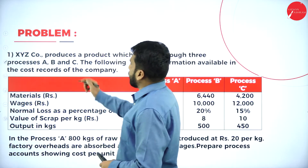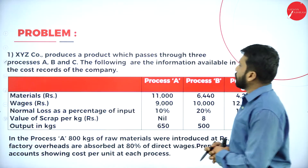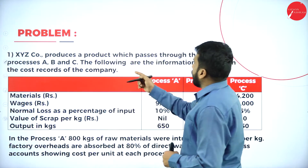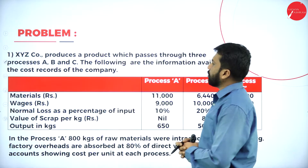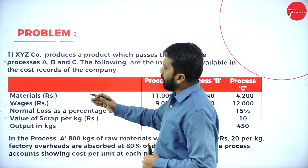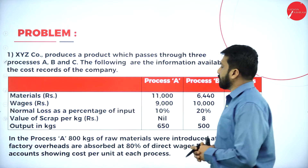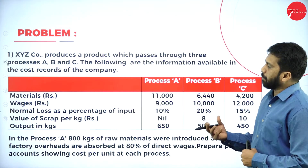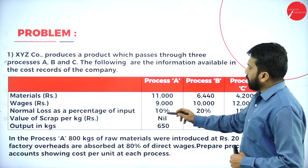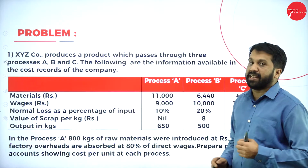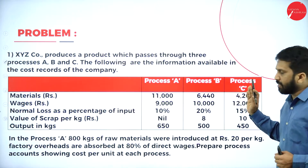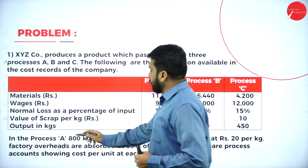The problem: XYZ company produces a product which passes through three processes A, B, and C. The following information is available in the cost records of the company. Under each process, we have material, wages, normal loss as a percentage, value of scrap per kg, and output in kg. Normal loss must always be calculated on input — while doing Process A, don't refer to Process B or C.